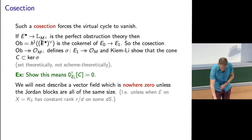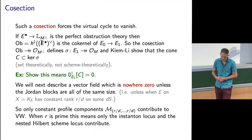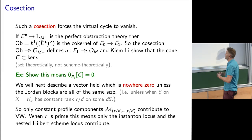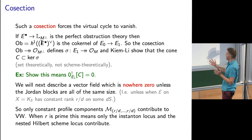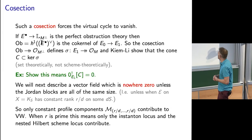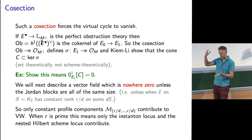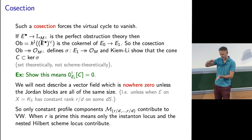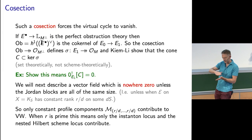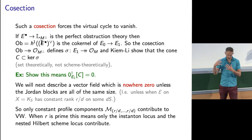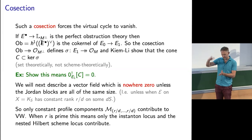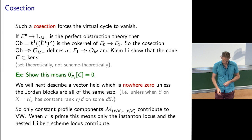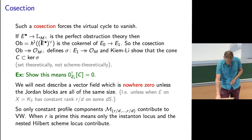On these various components, we're going to produce this vector field and show it's non-zero. It's non-zero except in the situation we've already been computing, where the Jordan blocks are all of constant size. That's when your sheaf on the threefold is supported on some thickening of the surface with constant rank over that thickening. Because of the prime rank assumption, that constant rank is going to have to be one.